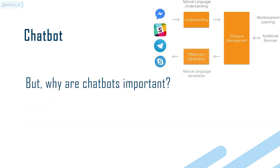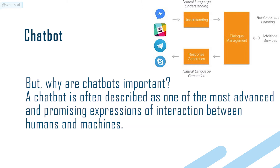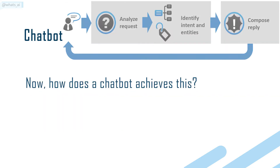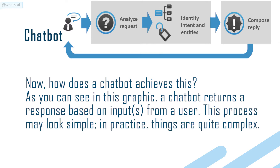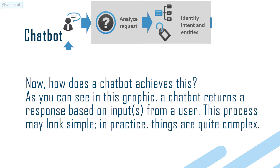But why are chatbots important? A chatbot is often described as one of the most advanced and promising expressions of interaction between humans and machines. Now, how does a chatbot achieve this? As you can see in this graphic, a chatbot returns a response based on inputs from a user. This process may look simple; in practice, things are quite complex.